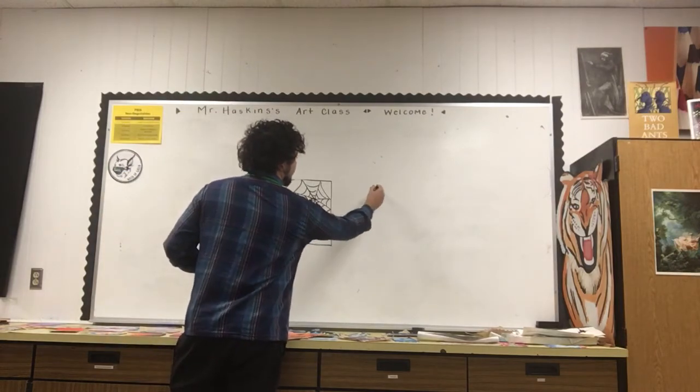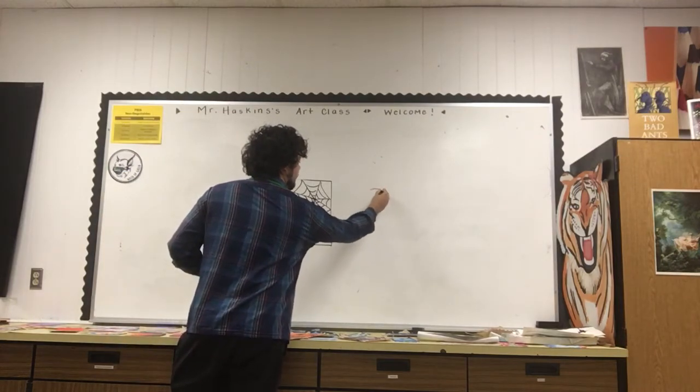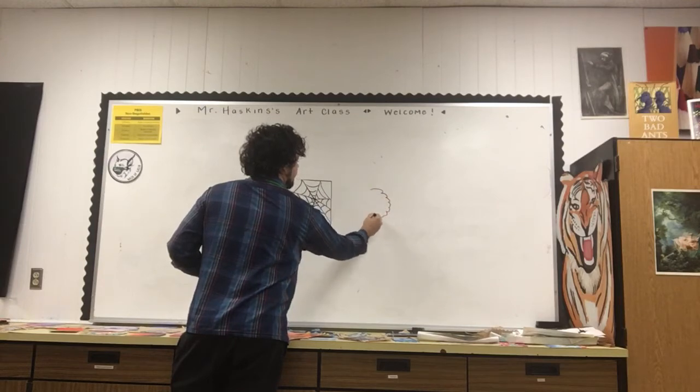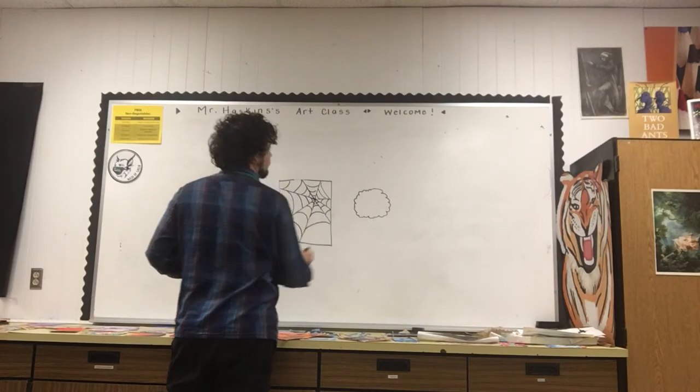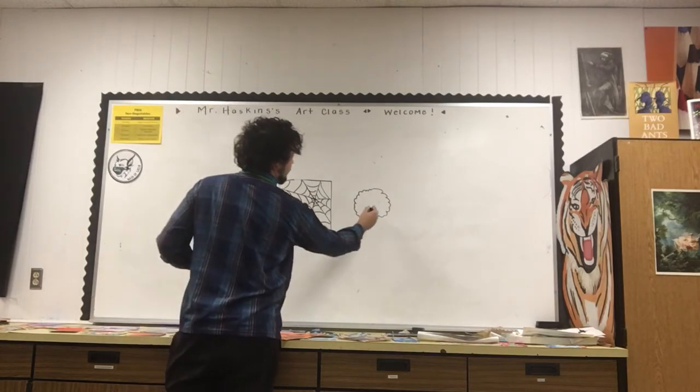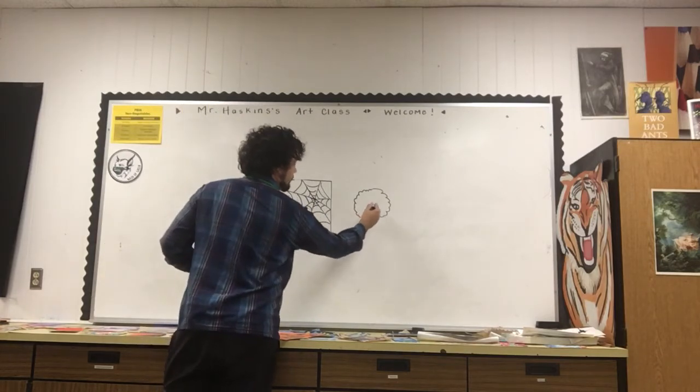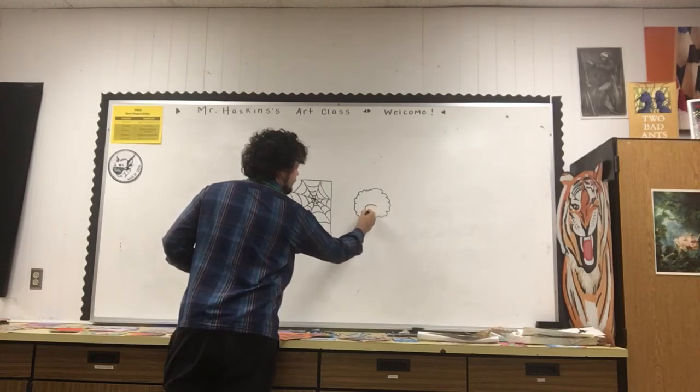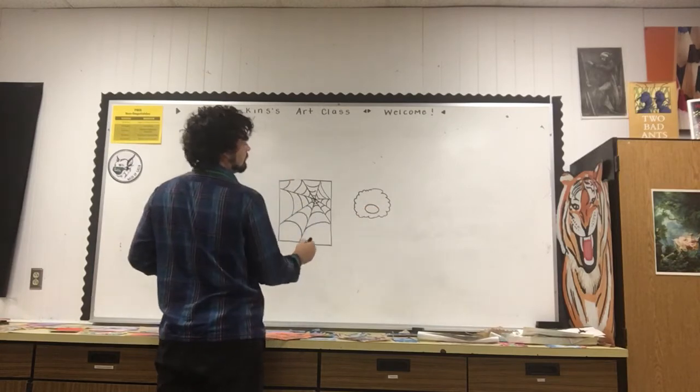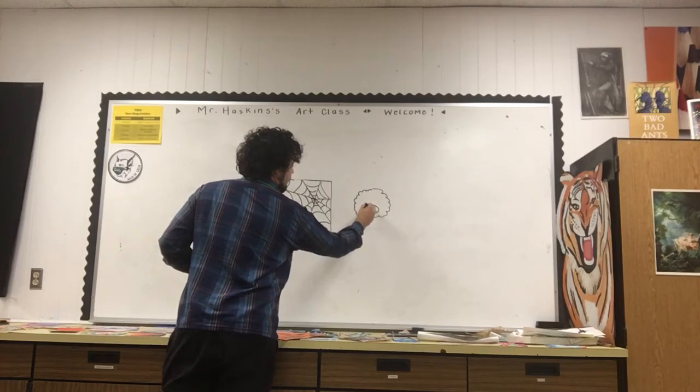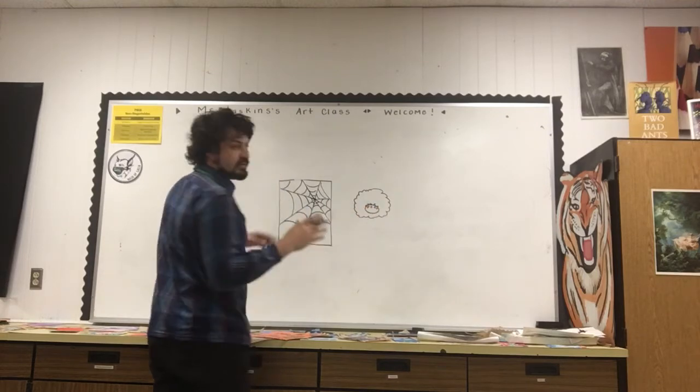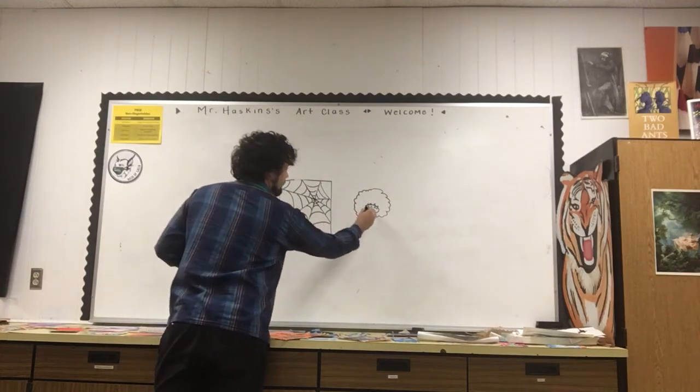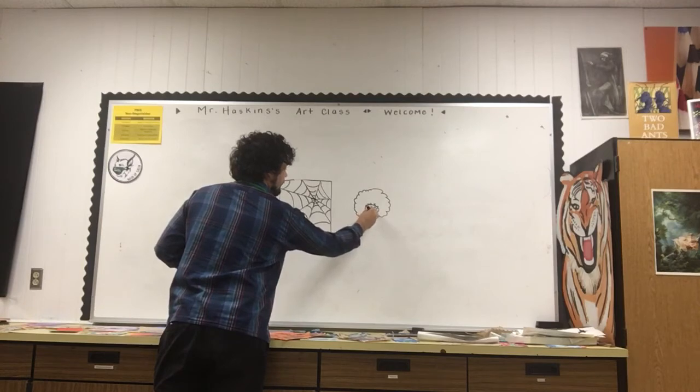So for the body I might do something like a bumpy circle. For the head I can put a smaller circle inside here, an oval. Spiders have a lot of eyes so you can put lots of little circles or little triangles.